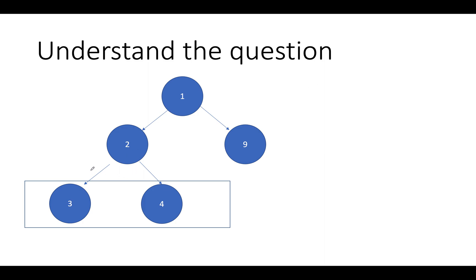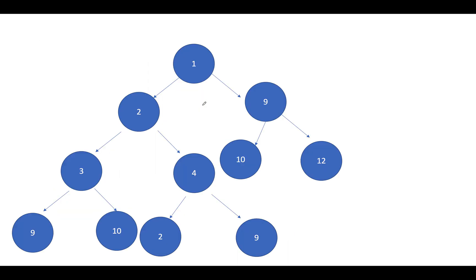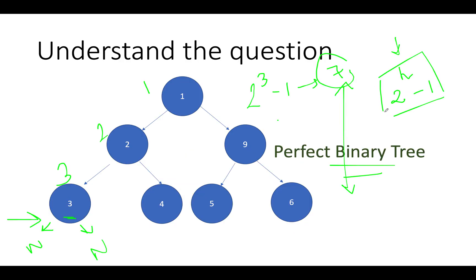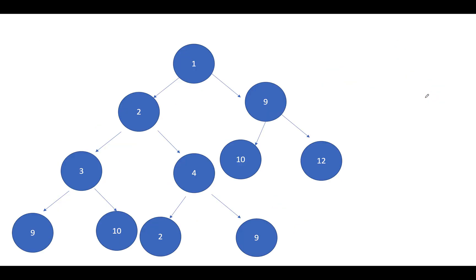All nodes in the last level are as far left as possible — which is true in this case. Had a node been attached in a different position, it would result in a non-complete binary tree. This tree abides by the constraint. Now let's look at the actual algorithm and how the formula 2^h − 1 for a perfect binary tree helps us devise it.